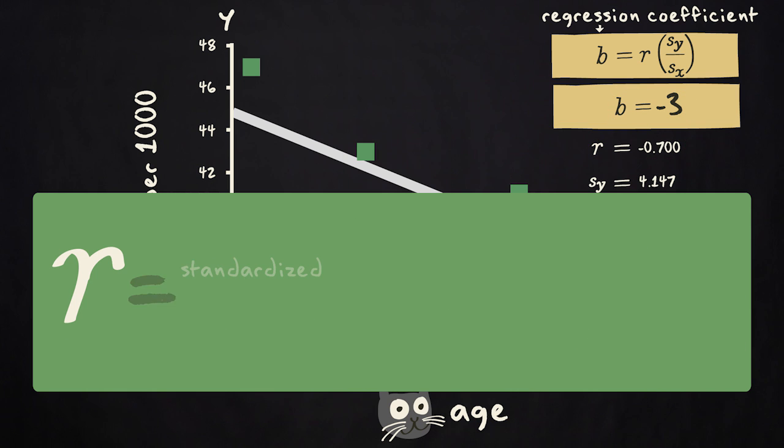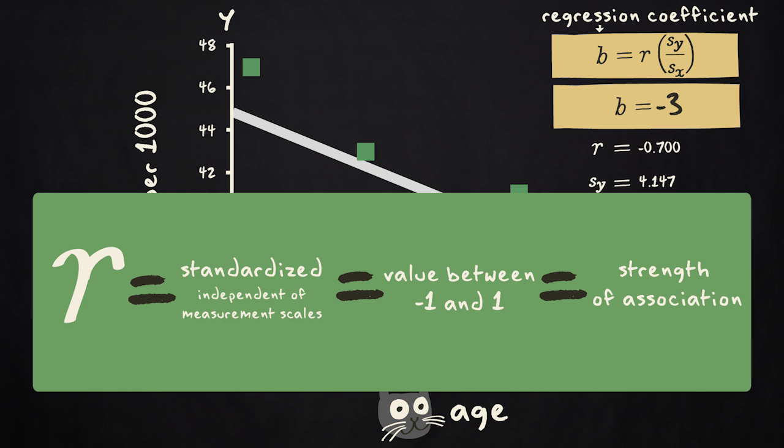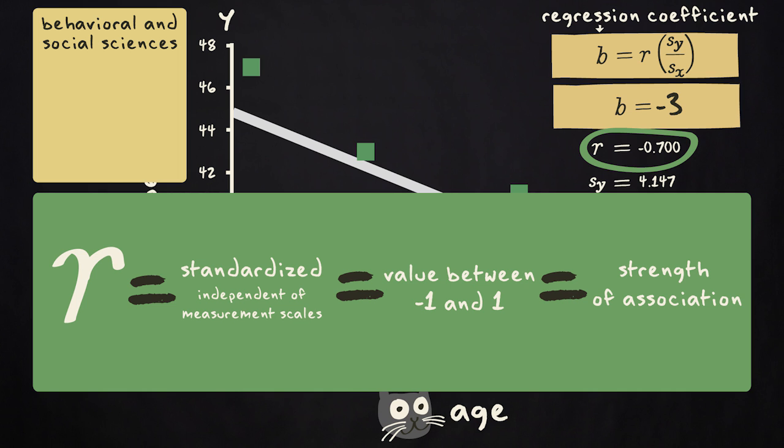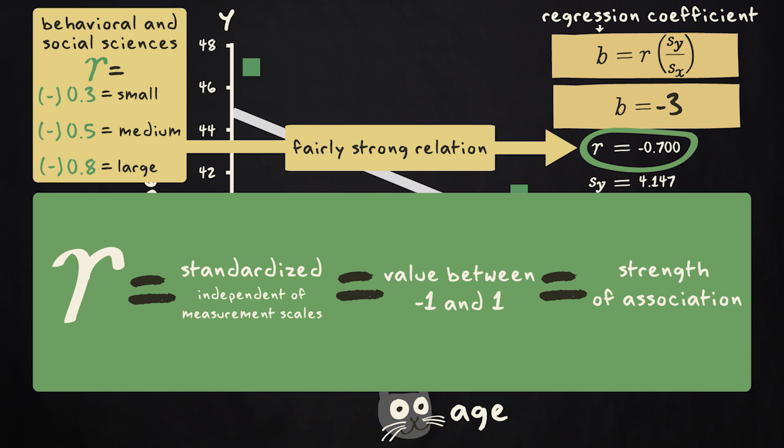Because the correlation coefficient is standardized, it's independent of measurement scales and lies between minus 1 and plus 1, it's useful as a measure of strength of association. Take the correlation of minus 0.7. In the behavioral and social sciences, we consider an absolute correlation value of 0.3 to be small, 0.5 to be medium, and 0.8 to be large. So a correlation of minus 0.7 indicates a fairly strong relation between cat age and video popularity.